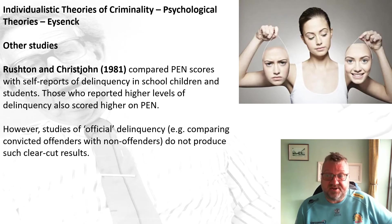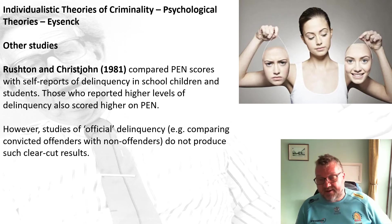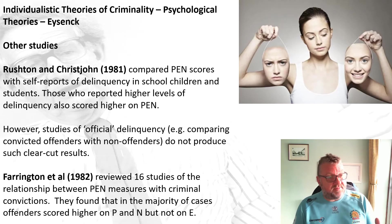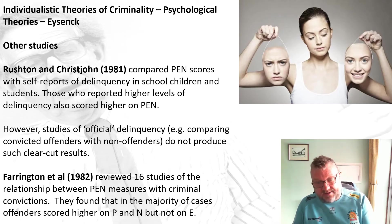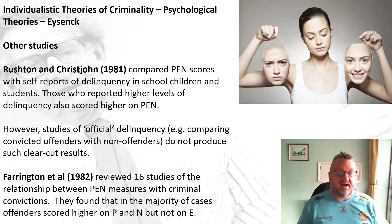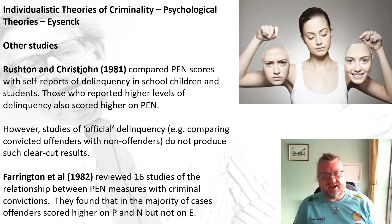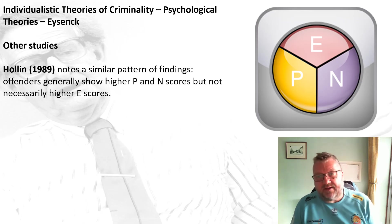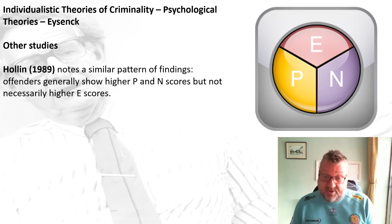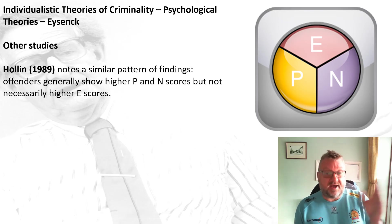However, studies of official delinquency — comparing convicted offenders with non-offenders — don't produce such clear-cut results. Farrington et al. in 1982 looked at 16 studies of the relationship between PEN measures and criminal convictions and found that in the majority of cases offenders scored high on P and N, but not on E. Similarly, Holling in 1989 noted a similar pattern of findings — offenders generally score higher on P and N, but not necessarily higher on E scores. So maybe the criminal type is P and N, not PEN.